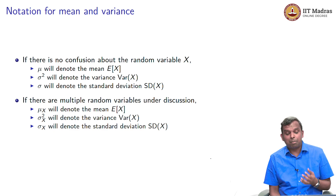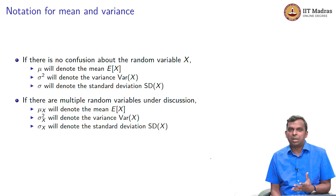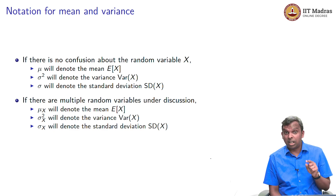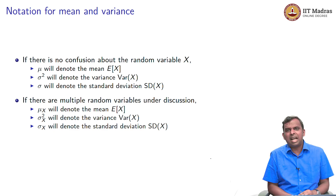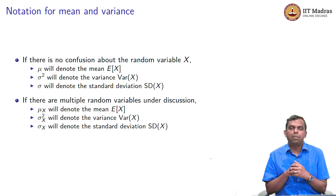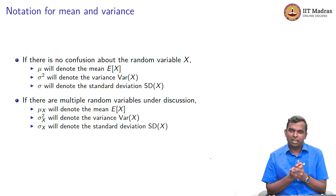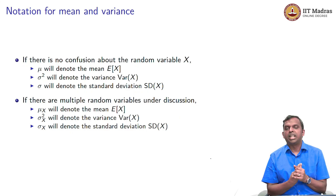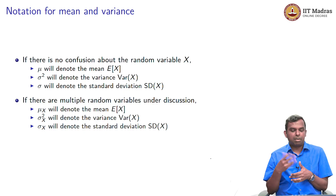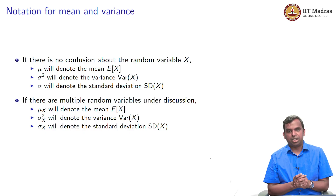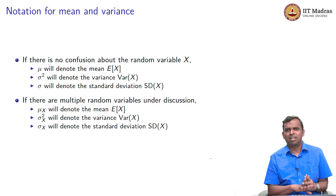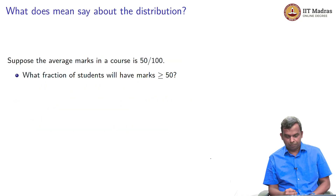If there are multiple random variables and you want to refer to a particular one, you simply add a subscript. Mu sub X is the mean of X, or expected value of X. Sigma X squared is the variance of X, and sigma X is the standard deviation. We will use this notation from now on — it will simplify our description.